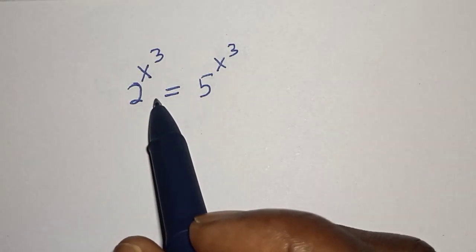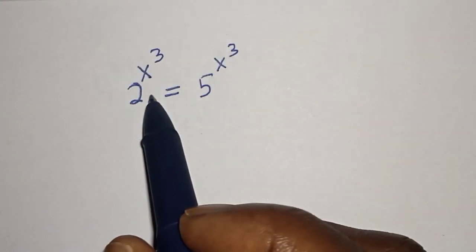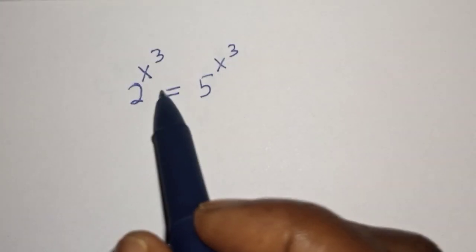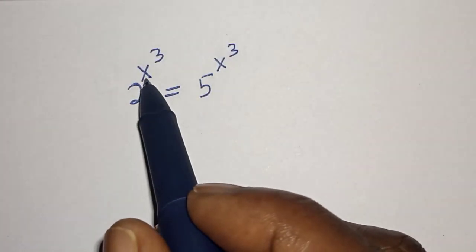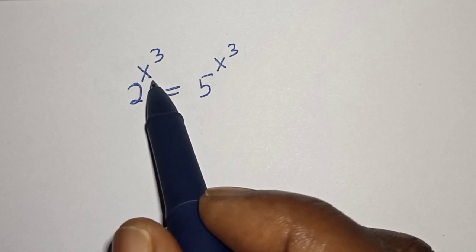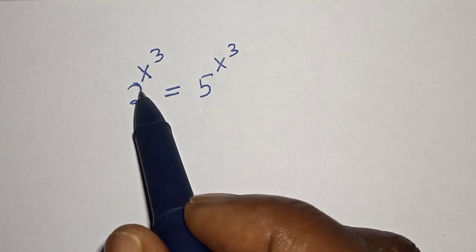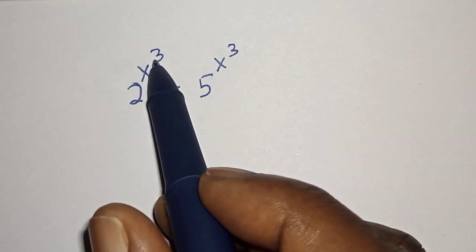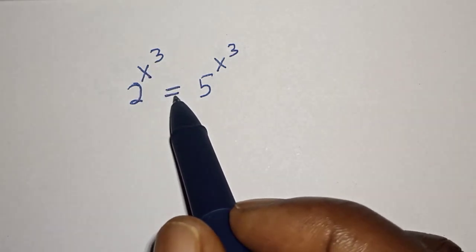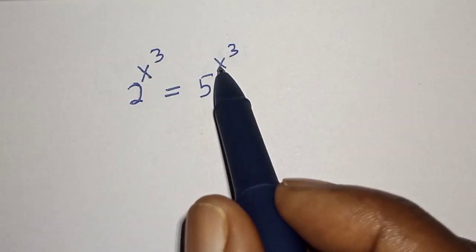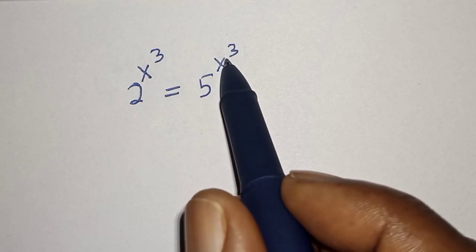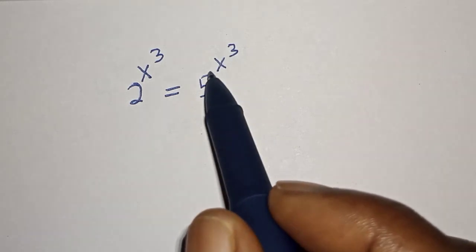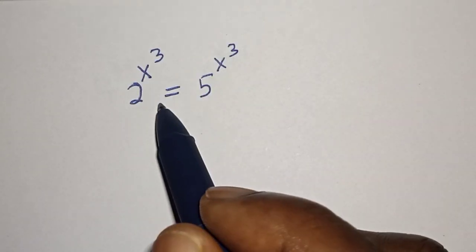Hello, welcome to Magic. In this class we want to find the value of s from this equation: 2 raised to power s cubed is equal to 5 raised to power s cubed.